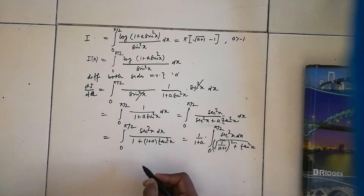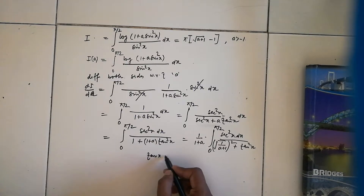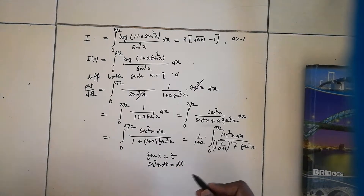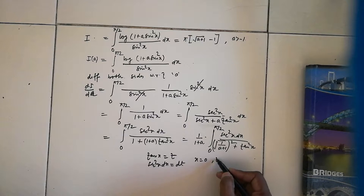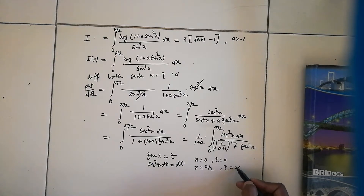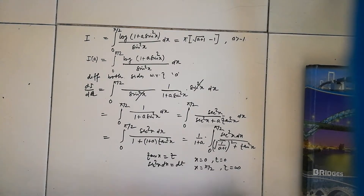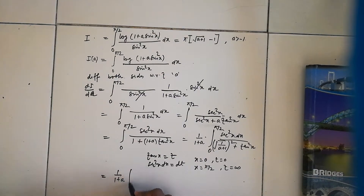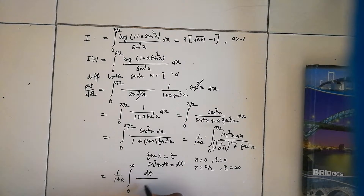In this special case, let tan x = t, so sec²x dx = dt. When x = 0, t = 0; when x = pi/2, t approaches infinity since tan(pi/2) is undefined. Symbolically the upper limit becomes infinity, giving us 1/(1+a) times the integral from 0 to infinity of dt.